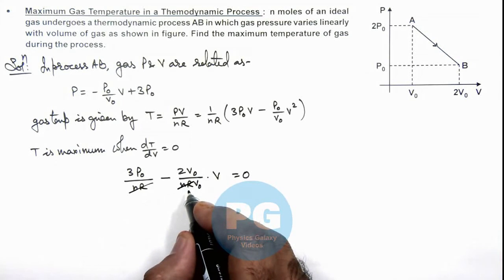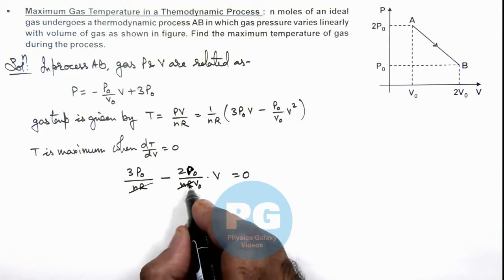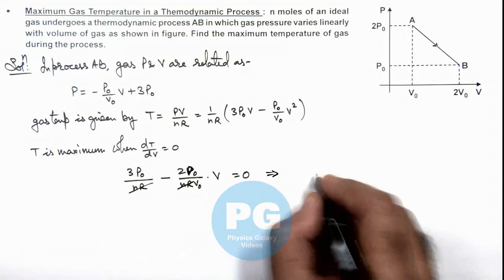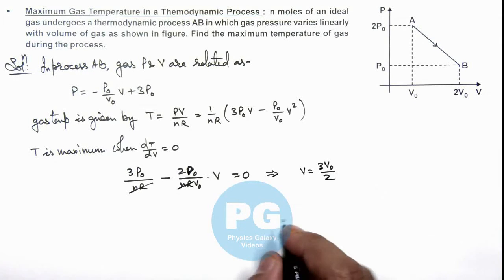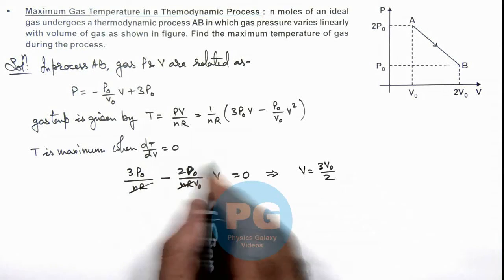If we simplify this relation, this gives us V equals 3V₀ by 2. So when the volume of gas is 3V₀/2, dT/dV becomes zero.